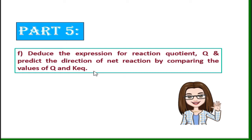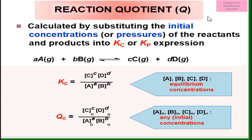The direction means whether the system shifts to the left or shifts to the right. So let's start. First of all, what is reaction quotient? It's calculated by substituting the initial concentration or pressure of the reactant and product into the Kc or Kp expression.